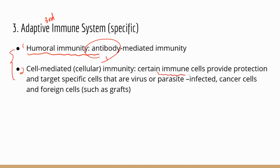Instead, cell-mediated immunity involves specific immune cells to provide protection. It is very similar to NK cells — they target cells that have been infected, whether by a virus or a parasite. Viruses and parasites live inside the cells, so antibodies or phagocytes can't do anything about it. You need a different type of defense to fight infected cells, and that's the cell-mediated immunity.